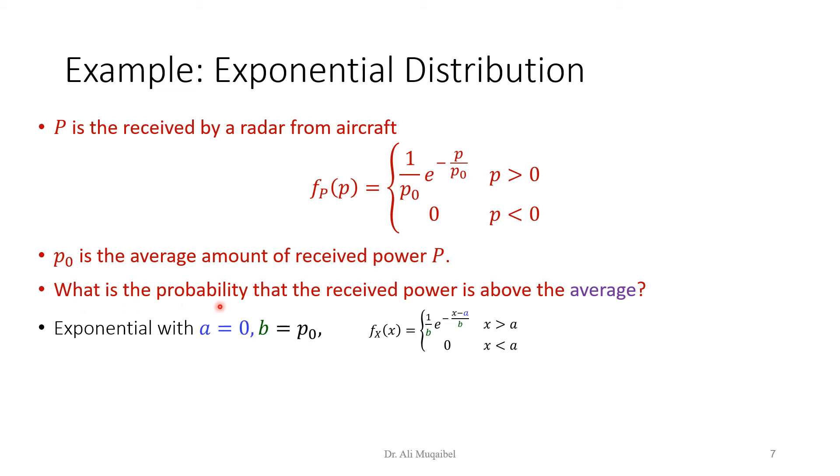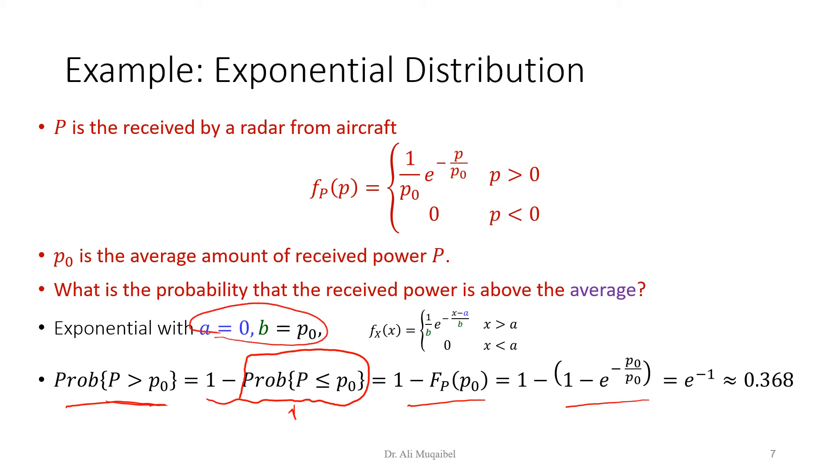Back to the question: What is the probability that the received power is above the average? The average is P0. So we are asking: what is the probability that P is greater than P0? We can flip this by saying it's the complement: 1 minus the probability that P is less than or equal to P0. Why are we doing this? Because this is the definition of the CDF. So it's 1 minus F of P of P0. Now I'm using the CDF of the exponential with the following parameters. By substitution, you get E to the power minus 1. The ones will cancel out here, and I get 0.368. So this is not a symmetric distribution. 0.368 of the times is above the average, and the remaining chances is below the average.